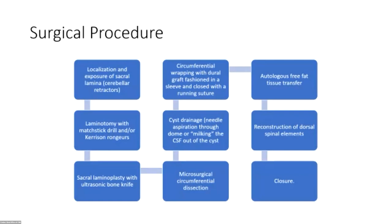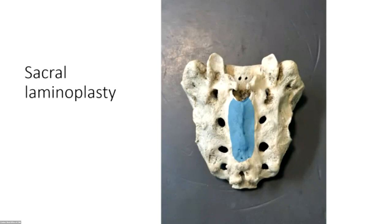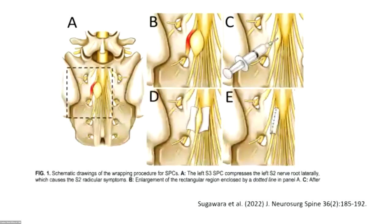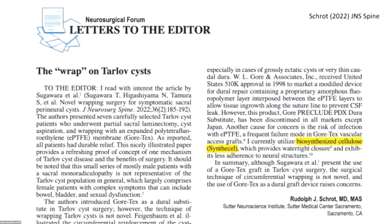The localization and laminoplasty area varies based on where the cysts are. This article published last year in Japan has a beautiful illustration of a very similar technique — they were using Gore-Tex to wrap the cyst. I had been using Durapair and switched over to Synthacell, which is a biosynthesized cellulose. It's very non-inflammatory, bio-inert, biopermanent, and can be removed. It also provides a pretty good watertight closure, is easy to work with, and appeals to patients because there's no animal product in it — unlike a xenograft such as bovine pericardium.